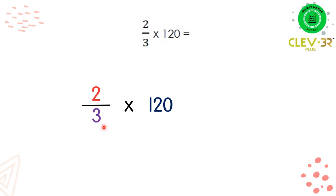Okay, when we look at the denominator and 120, we can conclude that the number 3 and 120 can be divided by 3.